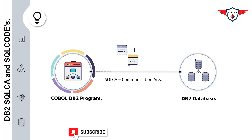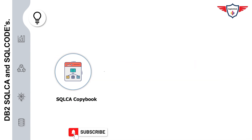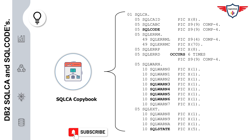DB2 updates the SQL Communication Area during the execution of every embedded SQL statement, and the information in this area applies to the most recently executed SQL statement. You can use these variables to identify whether your SQL statement executed successfully or failed due to some internal error, and take corrective action as per the return code returned by DB2 after execution.